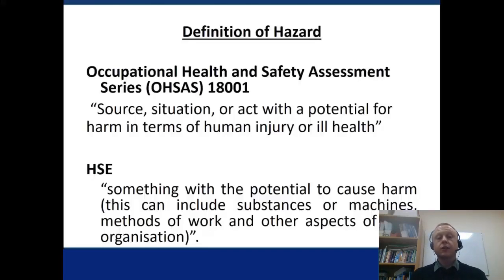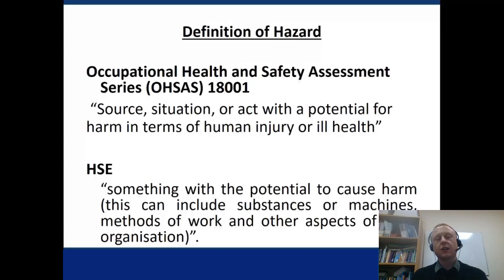Occupational Health and Safety Assessment Series 18001 says a hazard is a source, situation or act with the potential for harm in terms of human injury or ill health. HSE probably have the best definition, which is something with the potential to cause harm. This includes substances or machines, methods of work or other aspects of work. So a hazard is something with potential to cause harm.